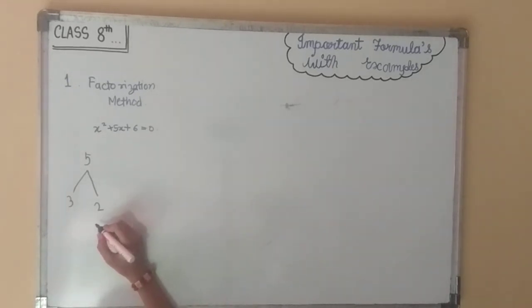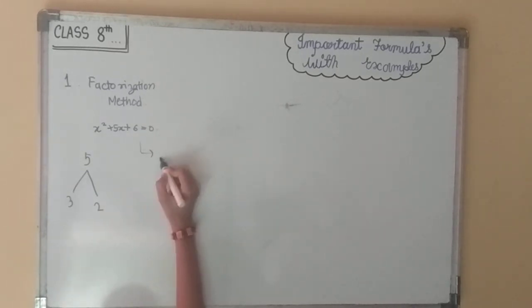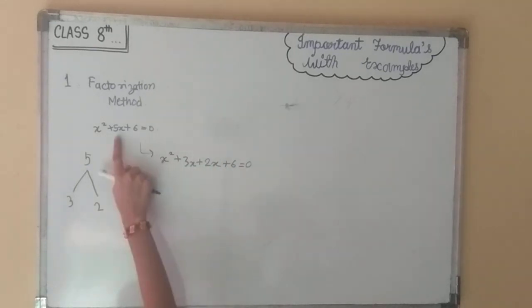The equation can be written as x² + 3x + 2x + 6 = 0. At the place of 5x, we have taken 3x + 2x, where 3 × 2 will get 6 (the constant term), and 3 + 2 will get 5x as it is.